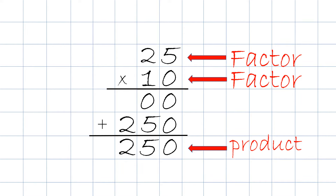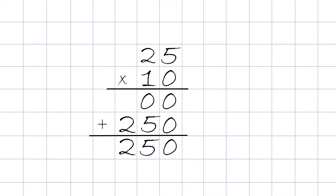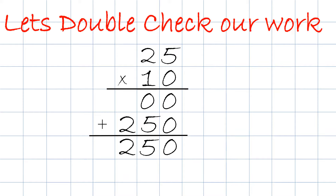We got two factors: factor times a factor equals the product. 25 times 10 equals 250. To excel in math, you always double check — if not triple check — your work.